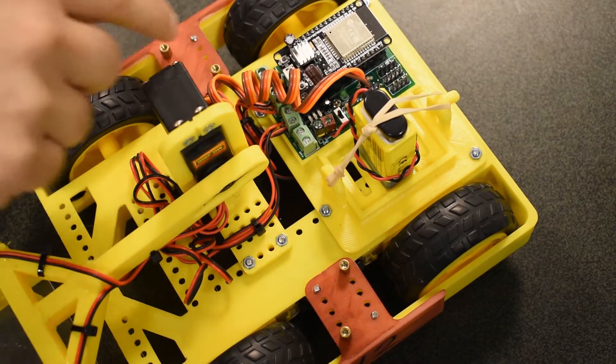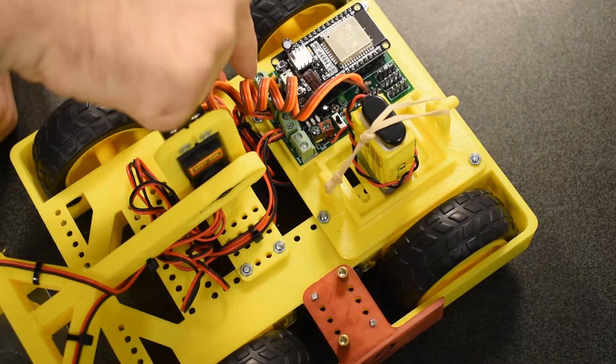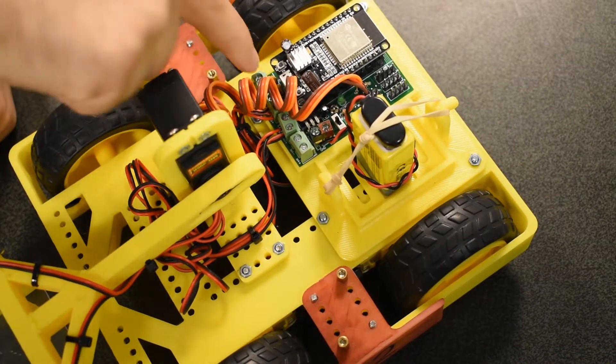The motor wires all terminate in these screw terminals on this custom printed circuit board to allow easy connection of raw wire to the circuit.